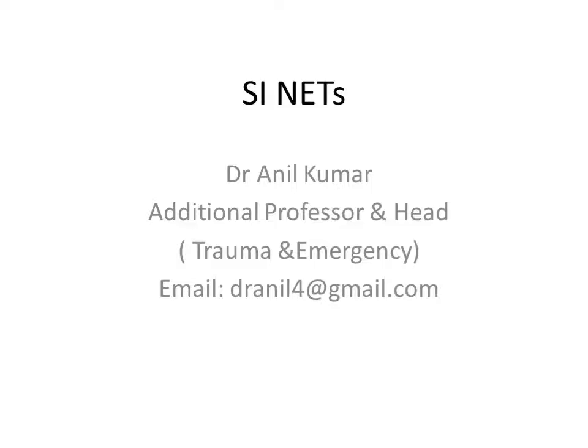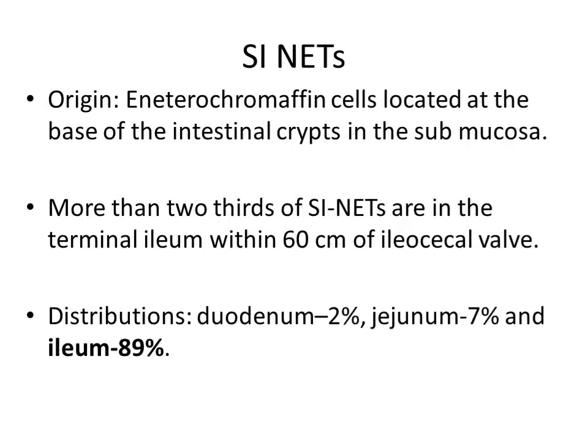Good evening. Today we will discuss about SI NETs. SI NETs originated from enterochromaffin cells located at the base of the intestinal crypts in the submucosa. More than two-thirds of SI NETs are in the terminal ileum within 60 cm of the ileocecal valve. Their distribution is: duodenum in 2% of cases, jejunum in 7% of cases, and the commonest site is the ileum in 89% of cases.